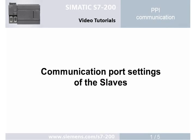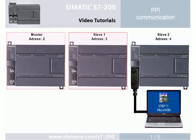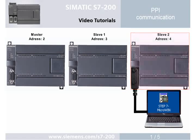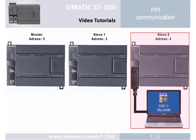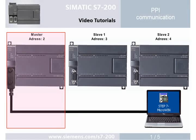Step 1: Communication port settings. For identification, unique addresses must first be assigned for the PLCs. The master receives address 2, slave 1 the address 3, and slave 2 the address 4. Address assignment is illustrated with slave 2 as an example. To avoid overlapping addresses, only the PLC to be configured must be connected with the programming device.